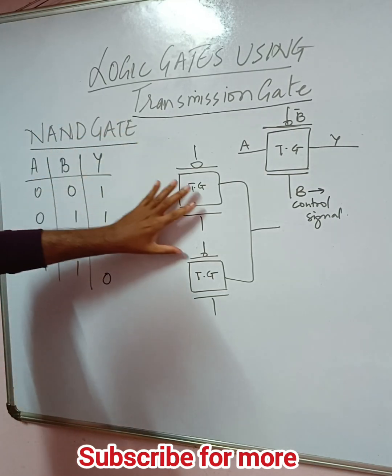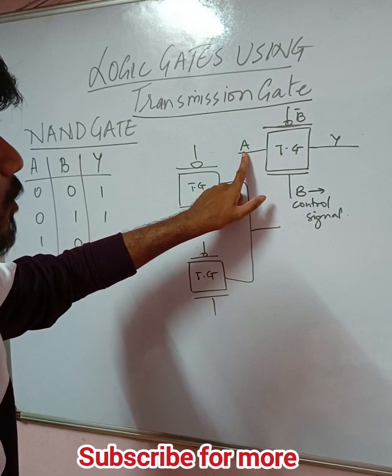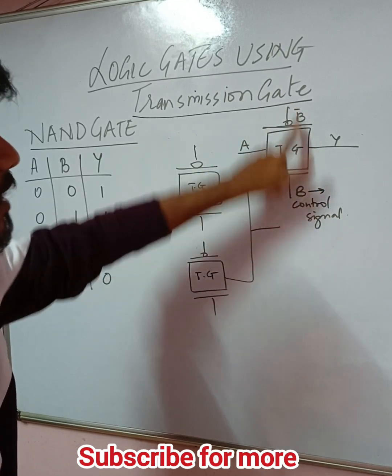How we are going to construct a NAND gate using the transmission gate - this is a basic logic diagram of a transmission gate where you have the input A and output Y and you have the control signal B.